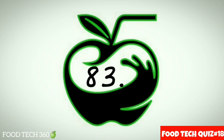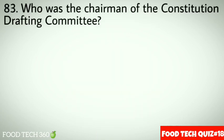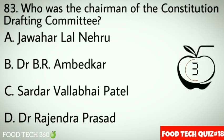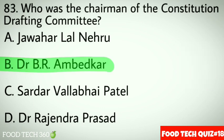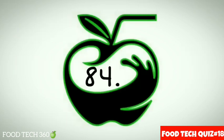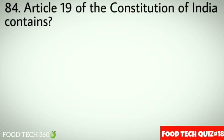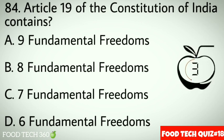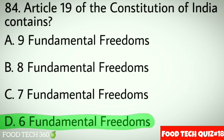Question 83: Who was the chairman of the constitution drafting committee? Options: A. Jawaharlal Nehru, B. Dr. B.R. Ambedkar, C. Sardar Vallabhbhai Patel, D. Dr. Rajendra Prasad. Correct answer: B. Dr. B.R. Ambedkar. Question 84: Article 19 of the constitution of India contains. Options: A. 9 fundamental freedoms, B. 8 fundamental freedoms, C. 7 fundamental freedoms, D. 6 fundamental freedoms. Correct answer: D. 6 fundamental freedoms. Question 85: The chairman of the National Development Council is the dash. Options: A. Prime Minister, B. President, C. Vice President. Correct answer: A. Prime Minister.